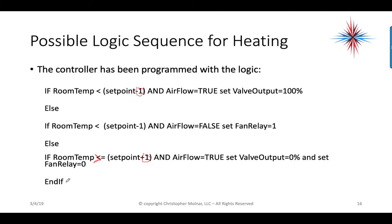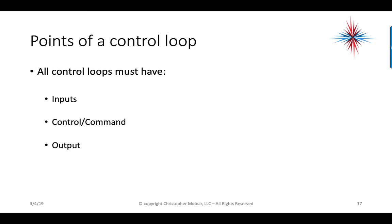Once this loop reaches the end, it goes right back to the start. We turned our fan on, and within less than 30 seconds it will confirm the fan is on, then open the valve to 100%. It continues going through this loop until the room temperature has warmed up to the set point plus one. Then it comes back, closes the valve, and turns the fan relay off. I could do this in two statements to give the fan a little more time to get the residual heat off the coil, but this is a simplified version. All control loops have to have inputs, control and command, and output — and they also have to have some logic that's part of the control and command.